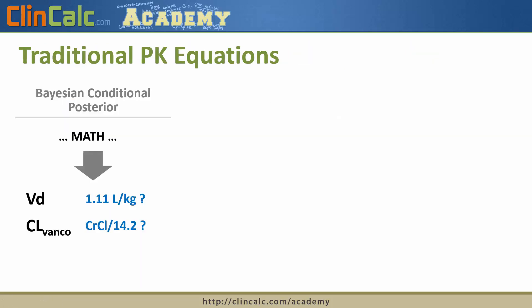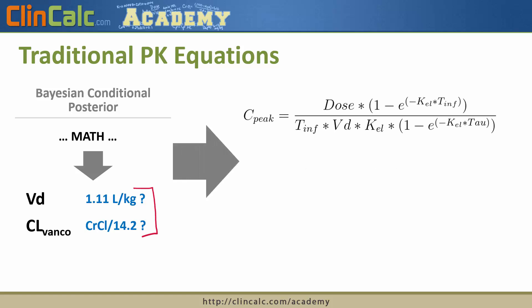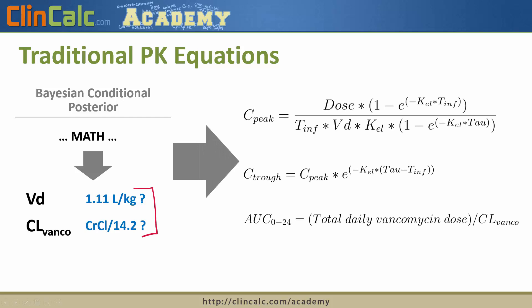Once we've figured out the most likely volume of distribution and clearance of vancomycin, the next step is to use traditional pharmacokinetic equations to come up with a particular dose and frequency for the patient. Based on our estimated volume of distribution and elimination constant derived from the serum concentration, we can figure out what peak level, trough level, and AUC we might expect from a given dosing regimen, and whether that's appropriate for our pharmacokinetic goals.